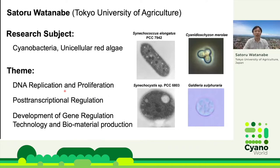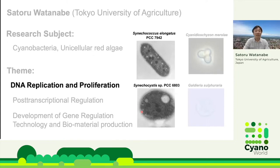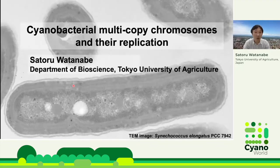In this slide, I'd like to introduce myself. My research subject is photosynthetic microorganisms, cyanobacteria, and unicellular red algae. Synechococcus 7942 and Synechocystis 6803 are popular model cyanobacteria, and Cyanidioschyzon merolae and Galdieria sulphuraria are also used for my research because of their simple cell structure and genome sequence. In this seminar, I'd like to focus my talk on DNA replication and proliferation of cyanobacteria. The title of my presentation is Cyanobacterial Multicopy Chromosomes and Their Replication.